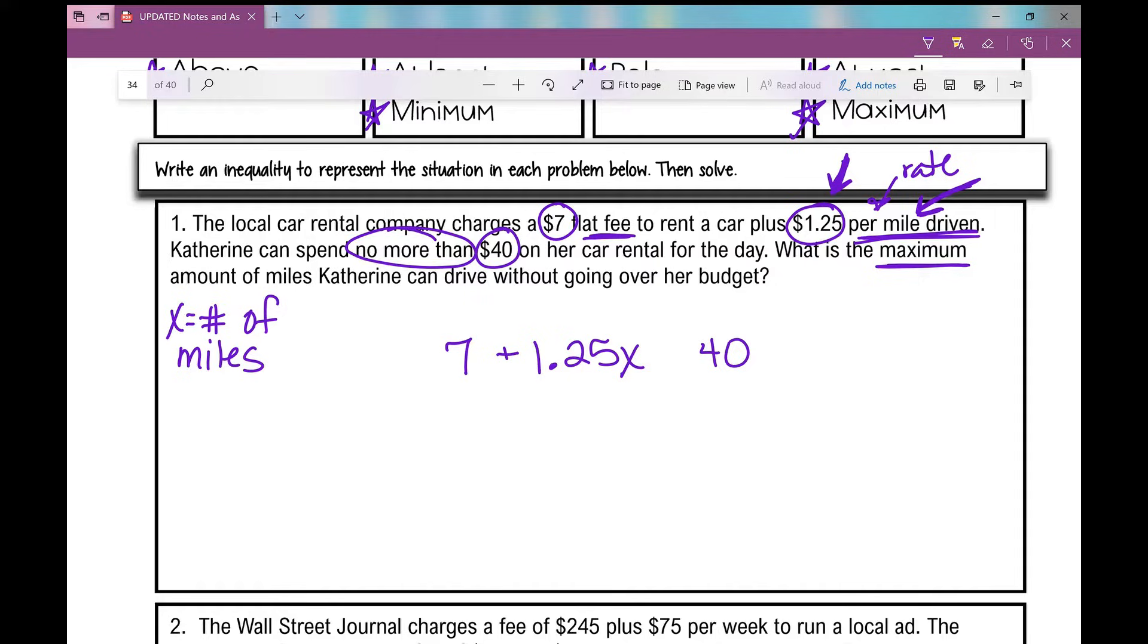And now I'm going to label this. I'm going to label each side. Right here, this would represent the amount that Catherine is spending. This over here represents her budget. This is how much she has to spend. She can't spend any more than $40. No more than $40.